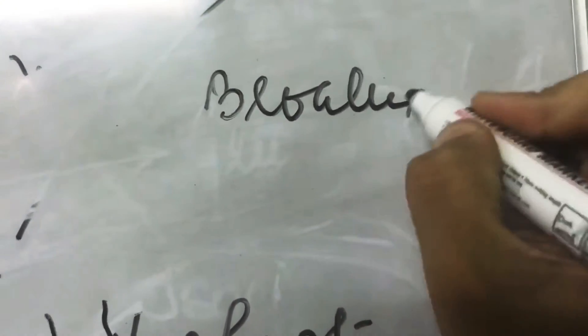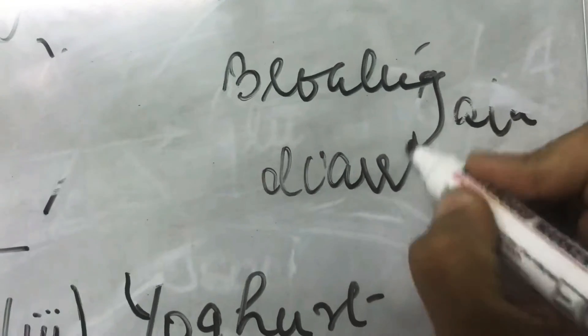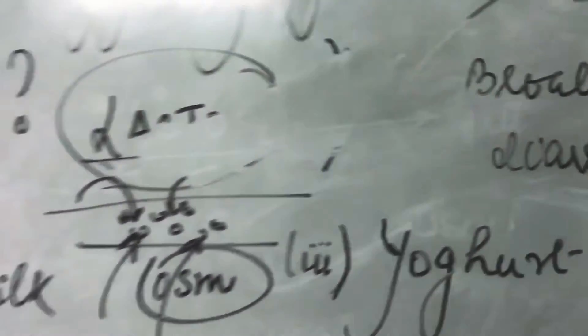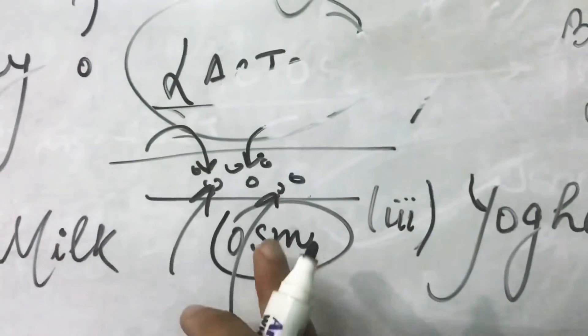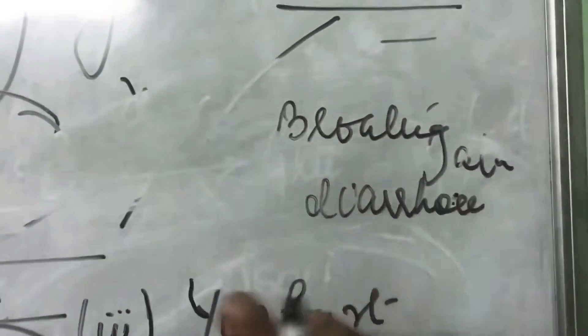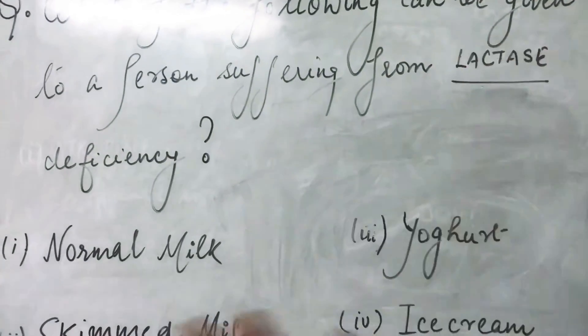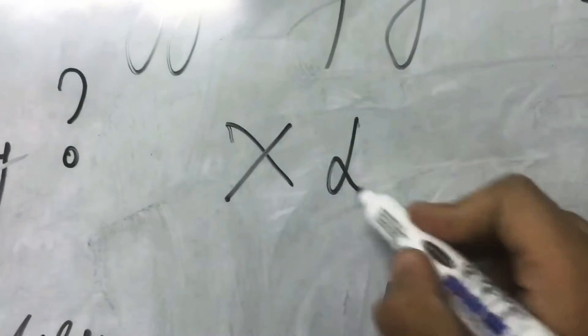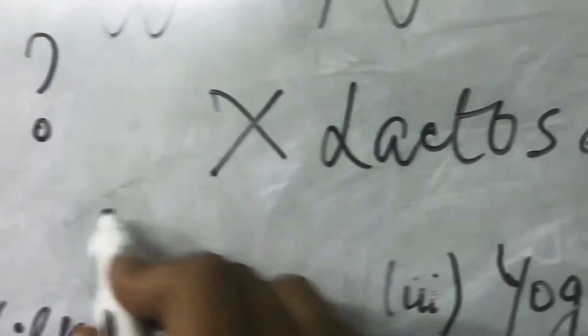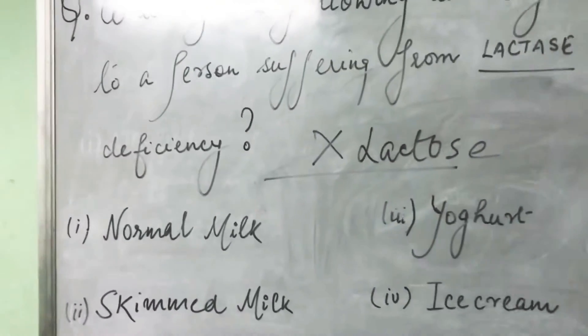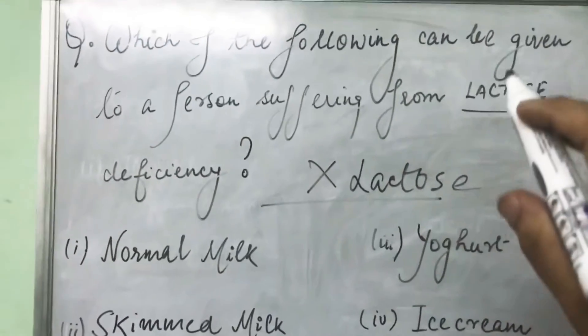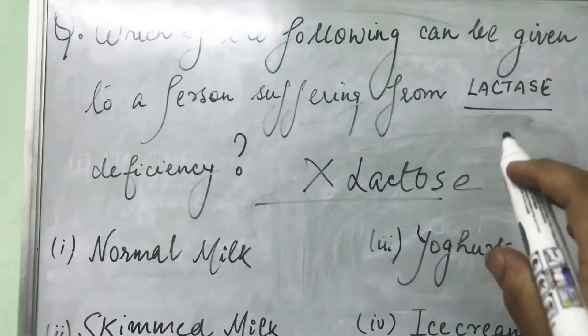This results in the symptoms of lactase deficiency — bloating and diarrhea. So when a person with lactase deficiency takes any food product containing lactose, it does not get absorbed, draws water, and causes bloating and diarrhea. Therefore, a person with lactase deficiency cannot and should not be given any product that contains lactose. That is the key to solving this question.